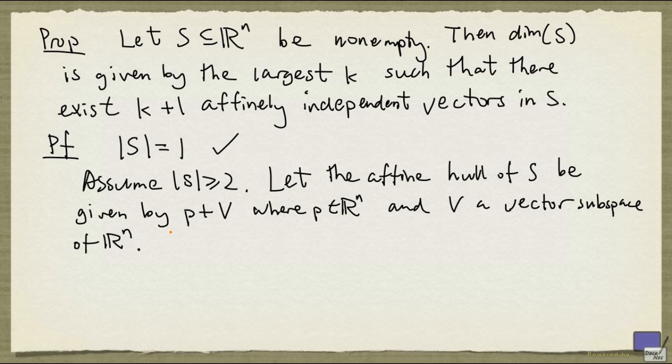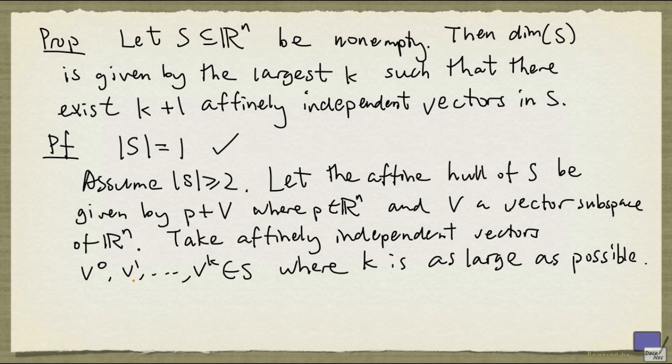And take affinely independent vectors v⁰ up to v^k from S, where k is as large as possible. Since S has at least two distinct vectors, k is at least 1.